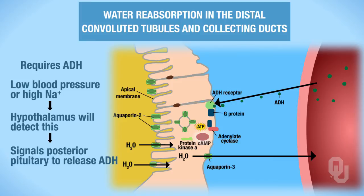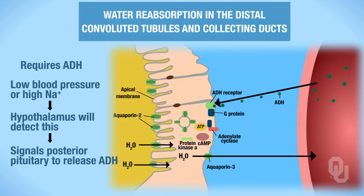Cyclic AMP activates protein kinase A. Protein kinase always phosphorylates, and in this case it ends up causing the insertion of the aquaporin. Water requires an aquaporin to be moved, so the water out in the lumen of the distal convoluted tubule or collecting duct can then move through the aquaporin — reabsorbed across the apical membrane, across the basolateral membrane, and into the plasma.